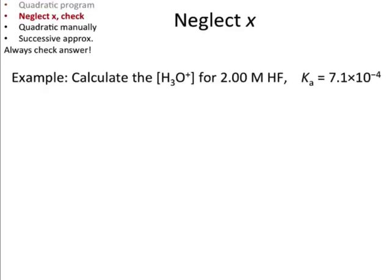The next thing on our list is to talk about how we go about neglecting x. Let me use an example to motivate what this means. Say we're doing an acid-base problem. Calculate the concentration of H3O+ for 2 molar hydrofluoric acid. And here's the Ka. And from the concentration of H3O+, you can then find the pH.